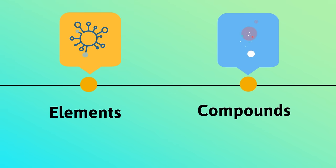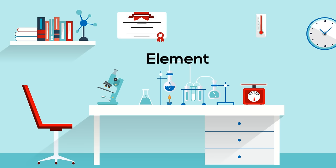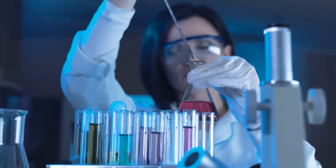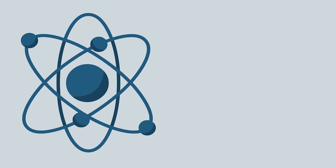An element is a pure substance. In other words, an element cannot be broken down into a simpler substance by physical or chemical means. An element is made up of only one type of atom.